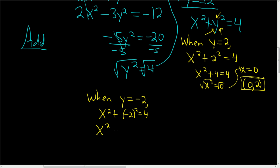This is x squared plus 4 equals 4. And so x squared is 0. And then again, x is equal to 0. So exactly the same. So the other solution is 0, that's the x. And then the y-coordinate is negative 2. And that's it.